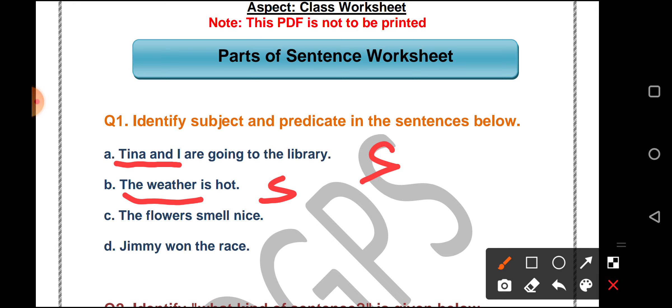The flowers smell nice. Similarly, what are we talking about in the sentence? The flowers. Where is the verb here? Smell. So smell will be the predicate and the flowers will be the subject.